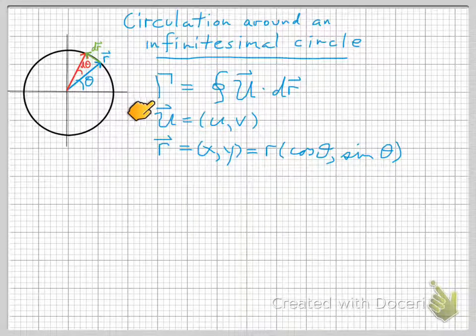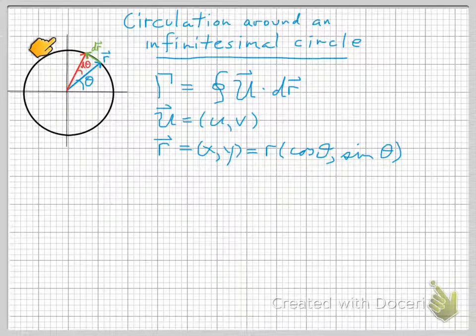It's a line integral of a vector quantity u dotted with dr. dr is this little green thing right here, which is an incremental distance around the circle.